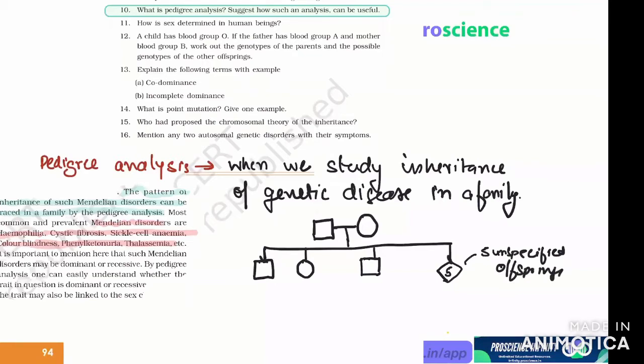Now, pedigree analysis. It is important to mention here that Mendelian disorders may be dominant or recessive. Affected individuals are shown by shading.